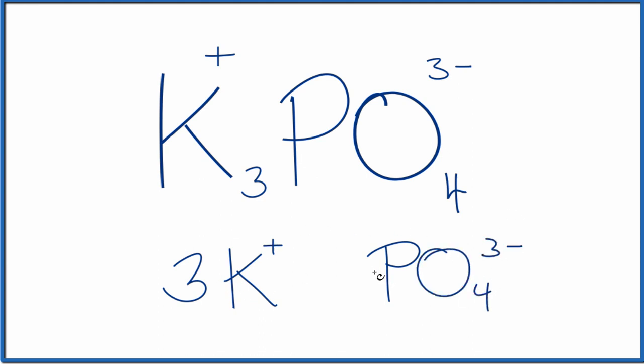So we have a total of three plus one, four ions here in this potassium phosphate formula unit.